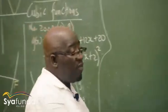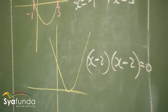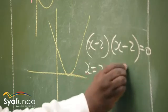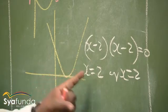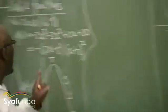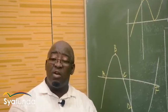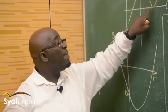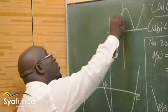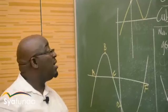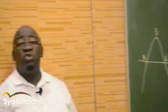Now let's look at the second example. If I give you x minus 2 into x minus 2 equals zero, what will be the answer? x would be equal to 2, or x is equal to 2. Whenever you have a repeated root like this, you must know that it touches but does not cross. The key points are: number one, the y-intercept; number two, the x-intercepts — up to three; and number three, the turning points, which in this graph are points B and E.